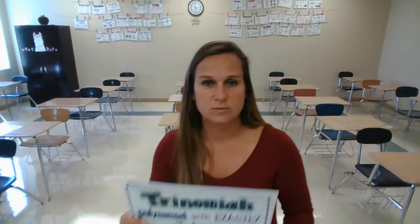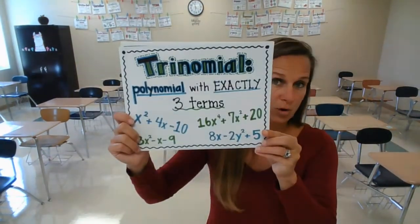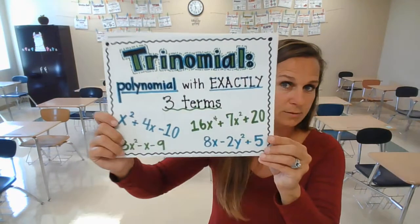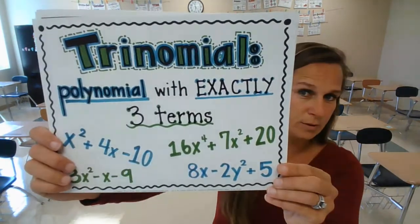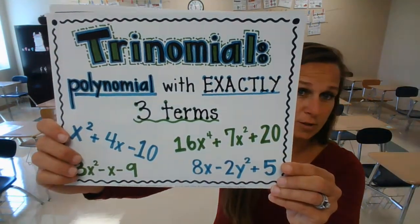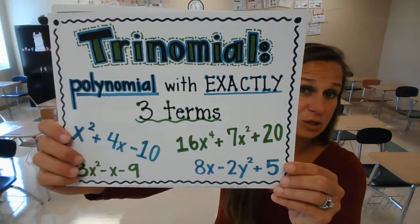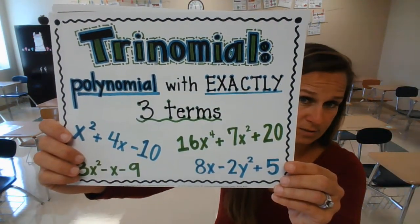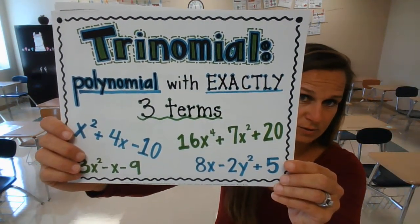The next one is a trinomial. A trinomial is a polynomial with exactly three terms. Here are some examples of trinomials. So mono is 1, bi is 2, tri is 3.